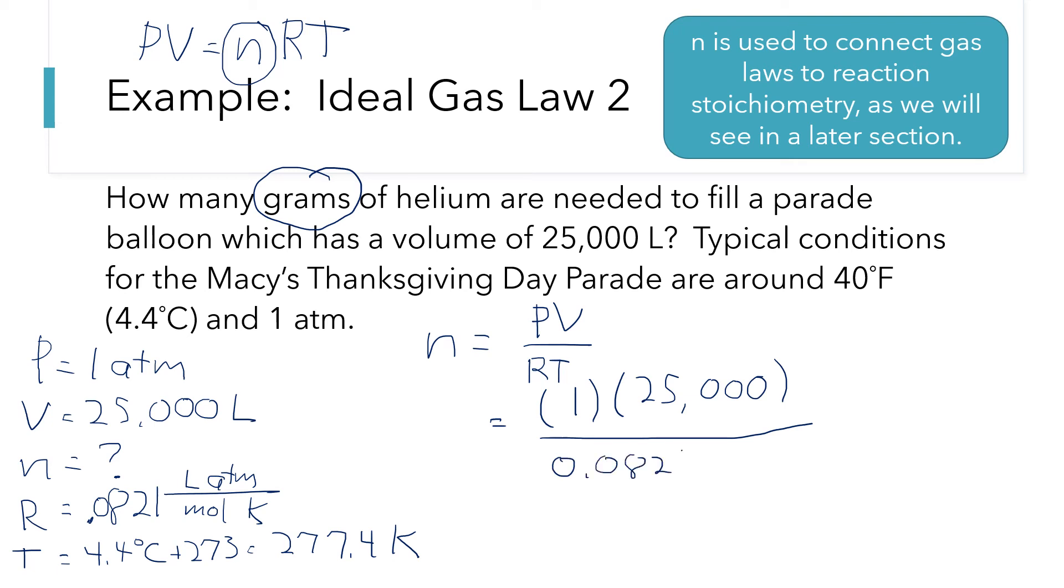We did check that all of our units were good over in the variable list, right? We've got atmospheres, liters, and Kelvin. So we should be good on all of our units. Also down there in the denominator, I've got temperature of 277.4 Kelvin.